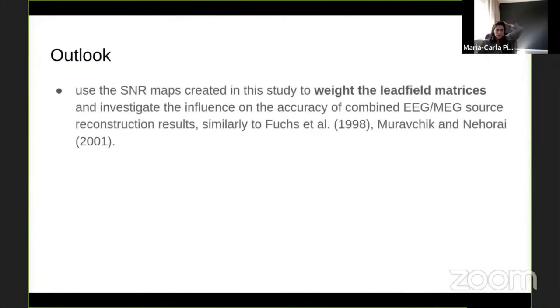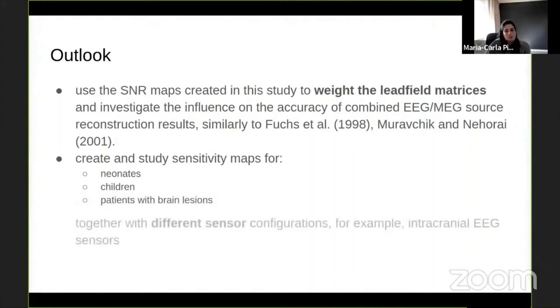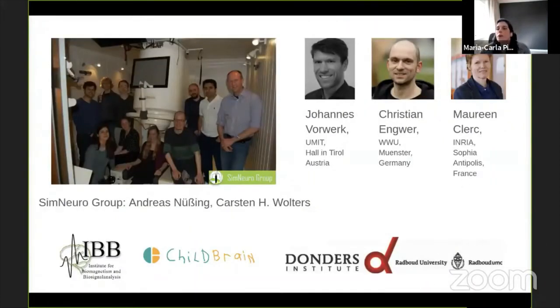Talking a bit about the outlook. The SNR maps that we created here could be used to weight the lead matrices that are used in the source reconstruction in EEG and MEG. This has already been done similar to what has been done in Fuchs and Mosher papers. We could create and study sensitivity maps for other patients or subjects like neonates, children, and patients with big or small brain lesions. We could study that with different sensor configurations, for example also invasive methods like integrated EEG sensors. With this, I would like to thank my co-authors, my whole group in Munster under the supervision of Carsten Wolters, Liana Vorberg, Christiane Jünger, and Maureen Clerc from my area. I would like to thank you for your attention.